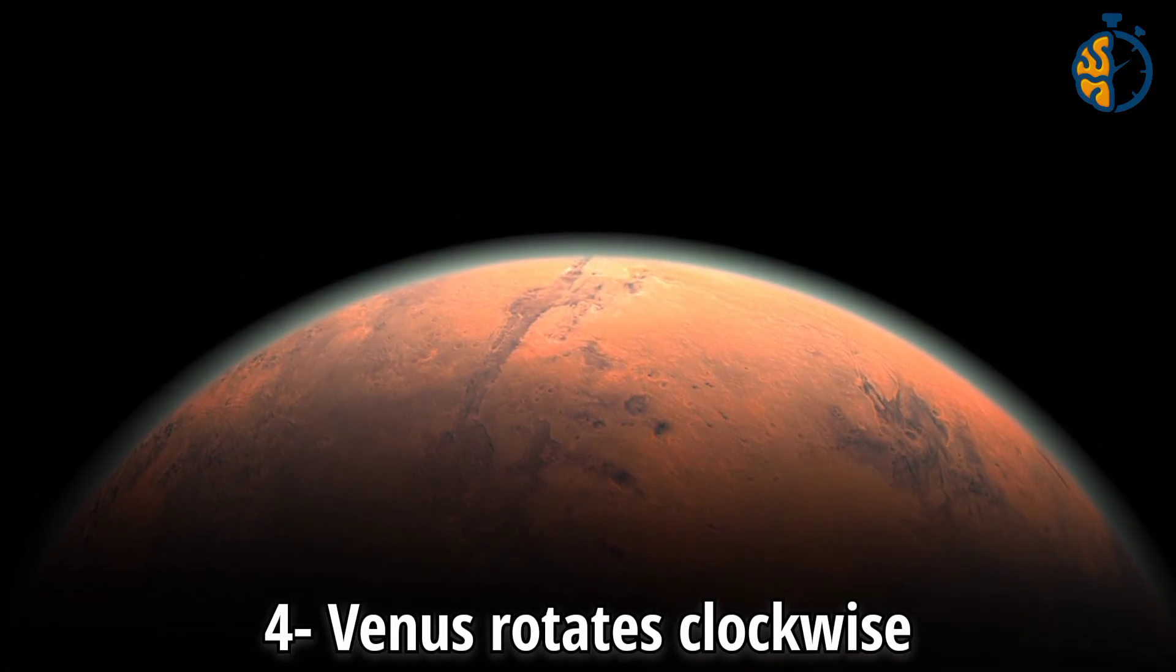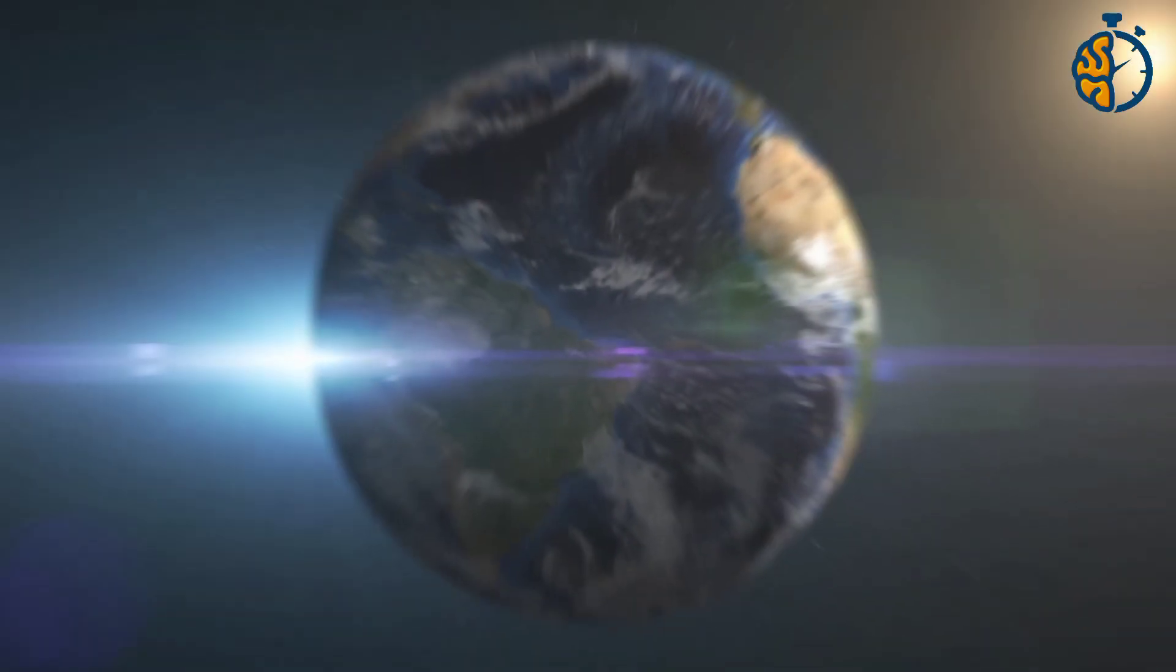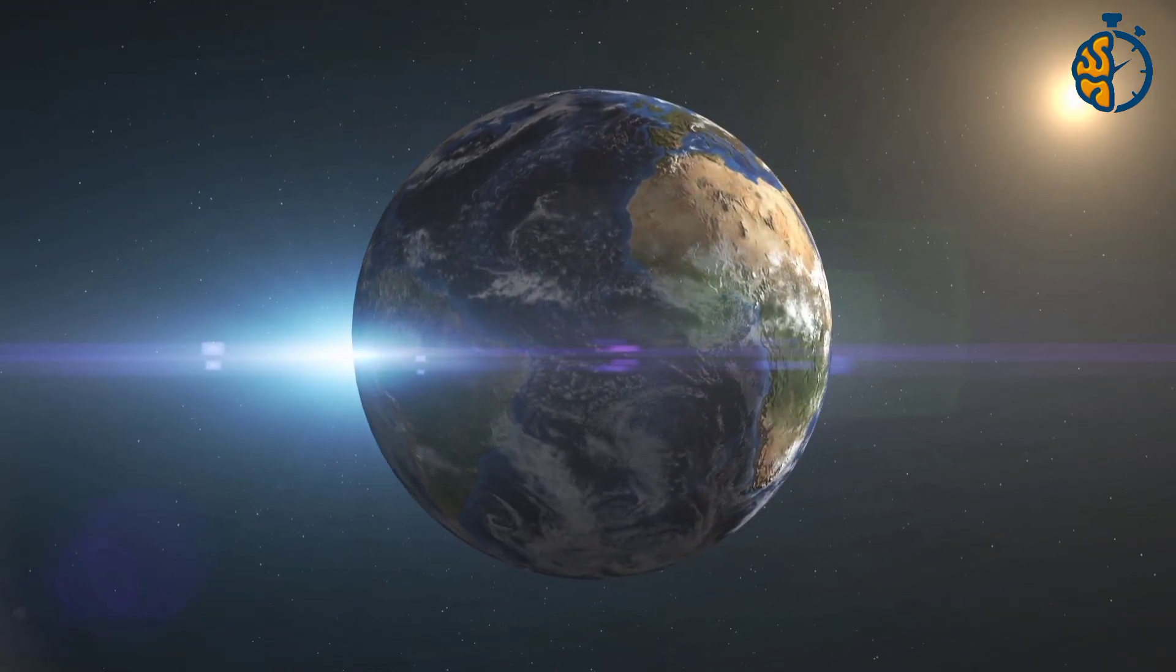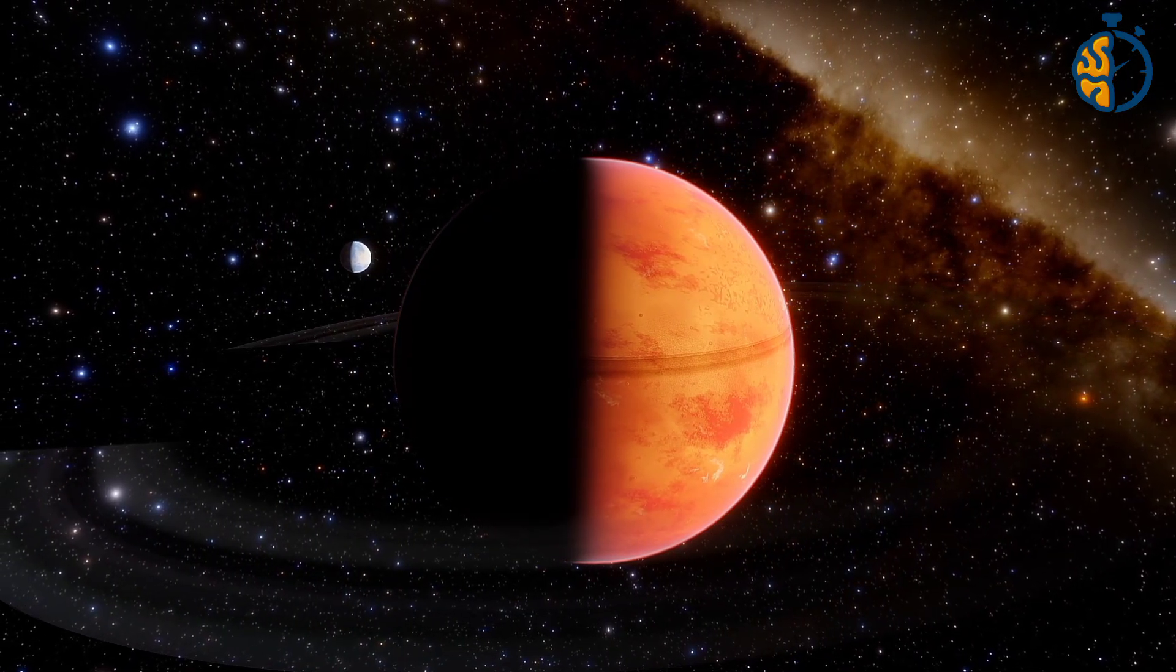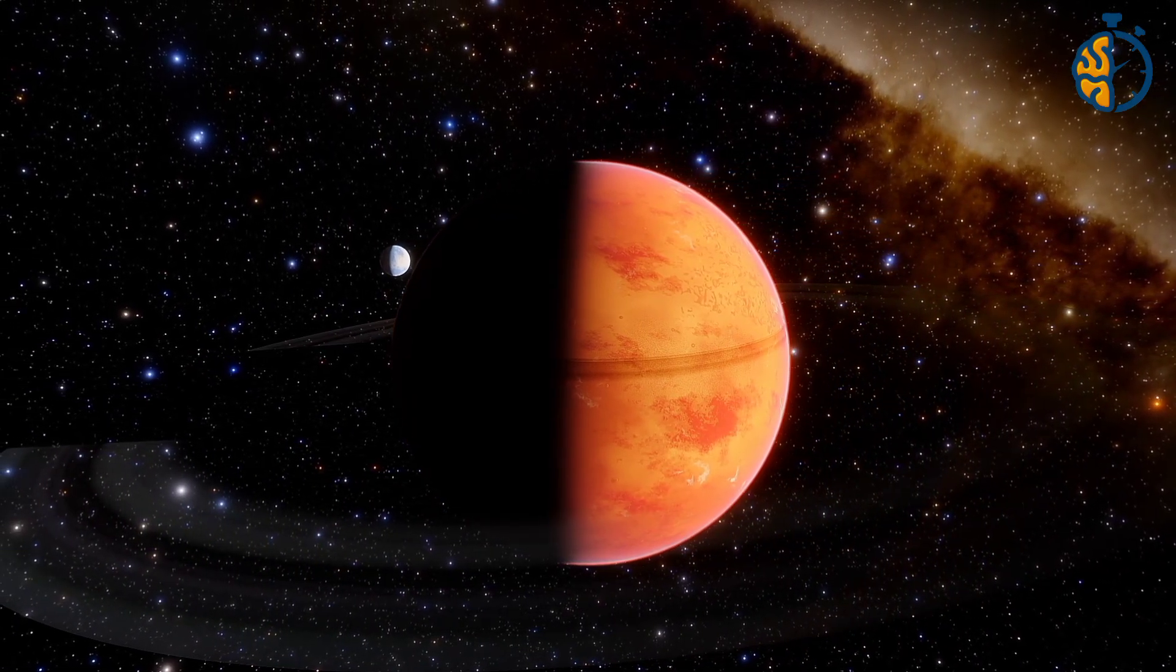Number 4. Venus rotates clockwise. All the planets in space revolve around the sun in a counterclockwise direction, from left to right, with the exception of Venus, which revolves around the sun in the same direction clockwise, from right to left.